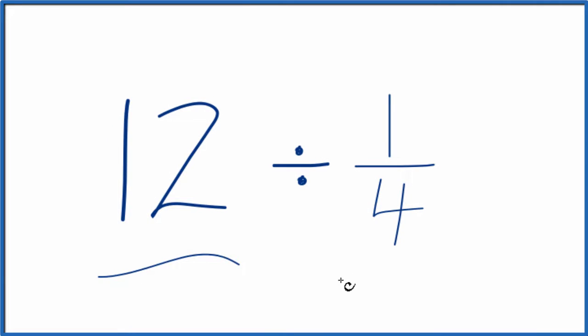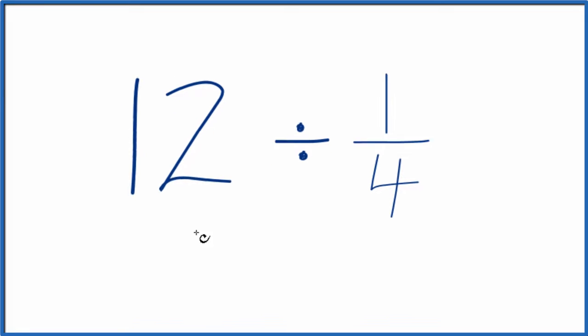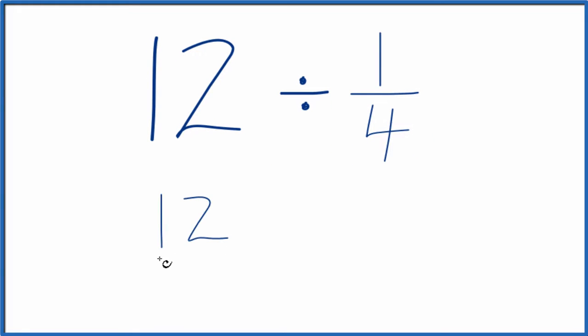If you need to divide 12 by 1 fourth, here's how we can do that. First thing, let's think of 12 as 12 over 1. We're dividing by 1, so it's still 12, but this gives us a fraction and that's going to help.